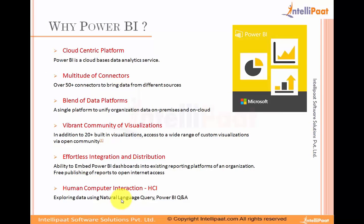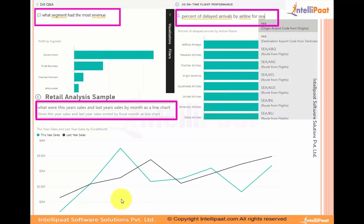The important factor is human-computer interaction — exploring data using natural query language. You can actually type in questions like 'What segment had the most revenue?' and Power BI will give you a visualization automatically. You don't need to create, recreate, or redesign existing applications. If you expose the Power BI natural language query feature, end users can type in whatever they have in mind and view visualizations directly. For example, you can ask about the most percentage of delayed arrivals by airline. It has auto-intelligence — as you type, it populates the data fields from the underlying data, and you can decide which chart type to view.